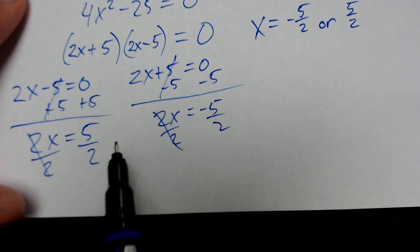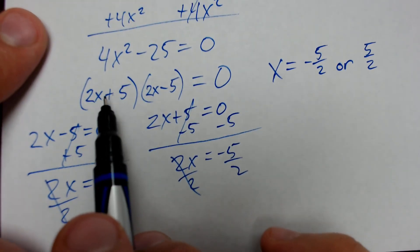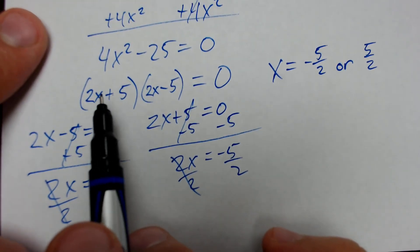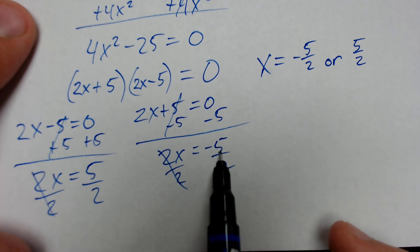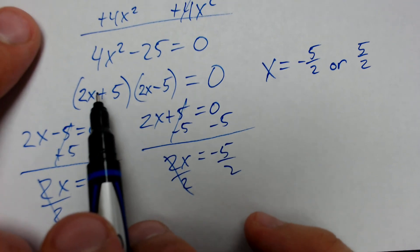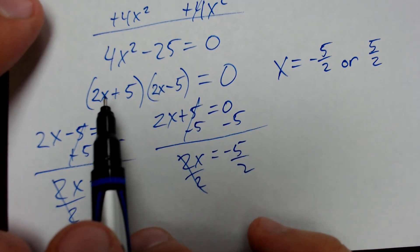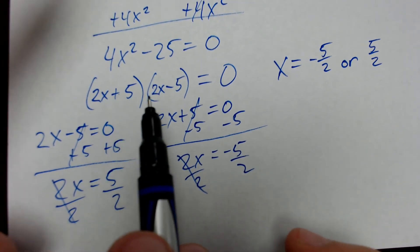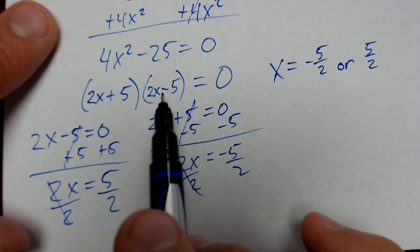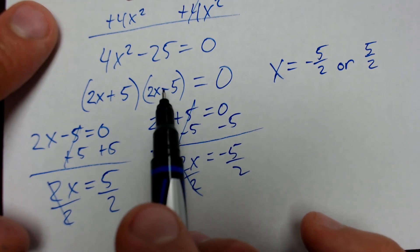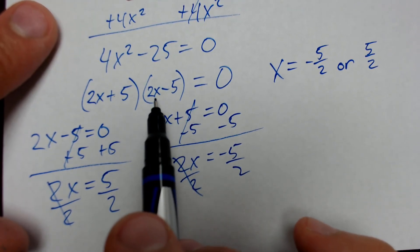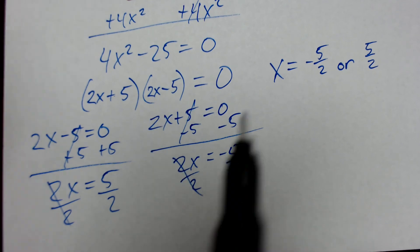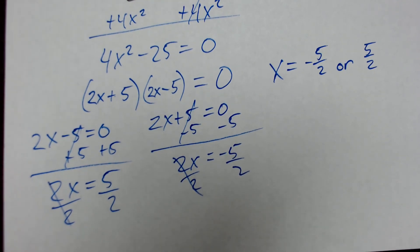To check: negative 5 over 2 times 2 equals negative 5, and negative 5 plus 5 equals zero. Positive 5 over 2 times 2 equals 5, and 5 minus 5 equals zero. It works out. That's it for this lesson. If you have any questions, let me know on Moodle, and I will see you in class.